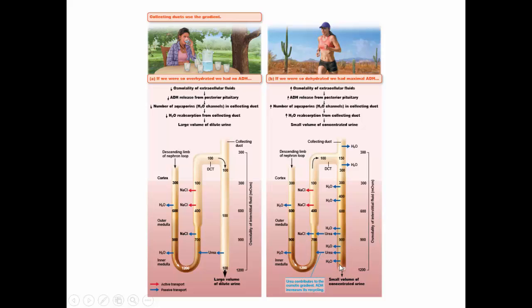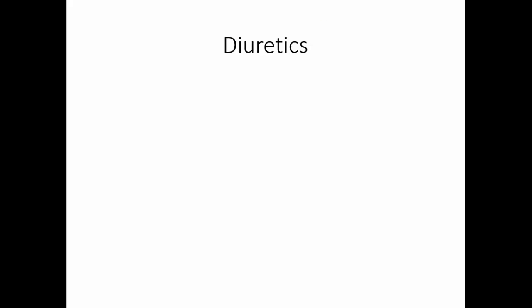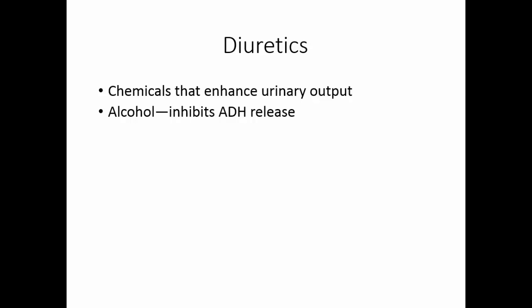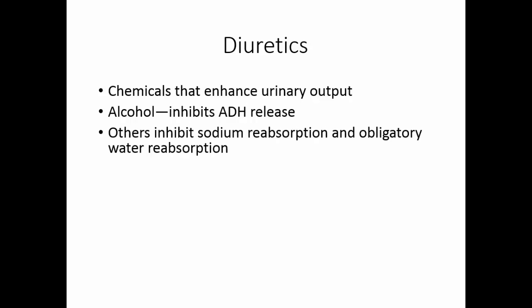That way we've saved the water back and allowed the solutes to leave. Diuretics are chemicals that enhance urinary output. Alcohol is a pretty potent diuretic because it inhibits the release of antidiuretic hormone, meaning your body does not pay attention to signals about being dehydrated. Other diuretics inhibit sodium reabsorption, and since water always follows sodium — that's obligatory water reabsorption — if we don't save sodium, we don't save water.